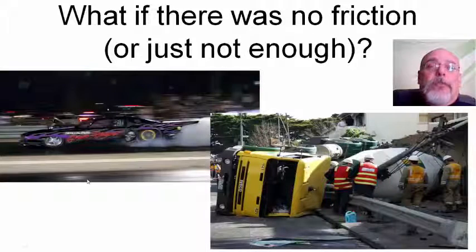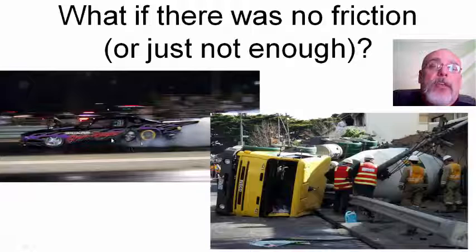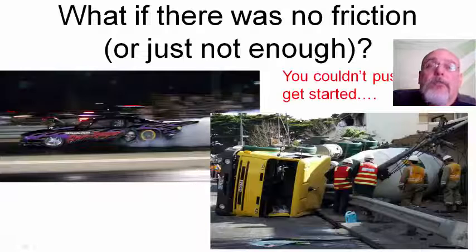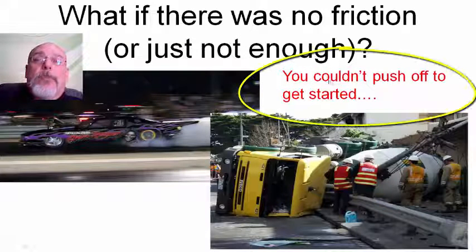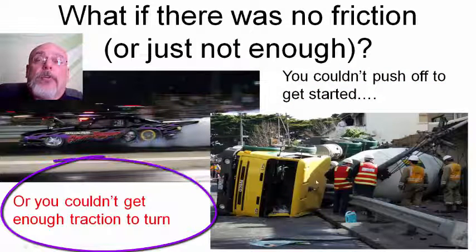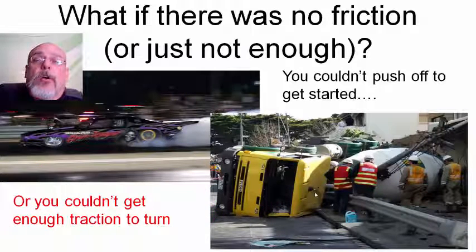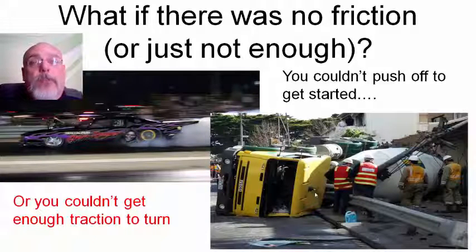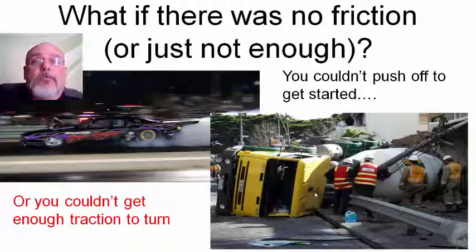If you're in a dragster car, sometimes at the very beginning the wheels will spin and spin and won't really catch. You need a certain amount of friction or the car is not going to move — you need to be able to push off. Without friction you couldn't push off to get started; the wheels would just spin and you could never move. Also, without enough friction you couldn't get enough traction to turn. If you're making a turn in a car, friction is required. That's why on icy, slippery roads you need to slow down — turns are when a lot of cars lose control and cause accidents.